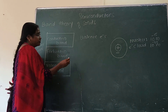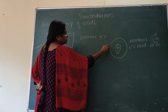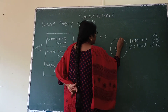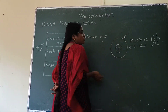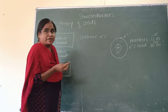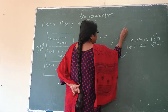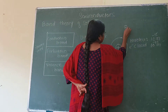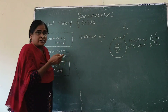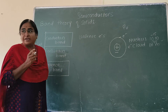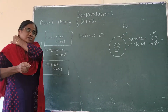Each atom is identified by the energy level associated with its valence electron. That means if you have one atom, the valence electron of that atom will have a certain energy — suppose it is E_D — and this atom is identified by this energy level.